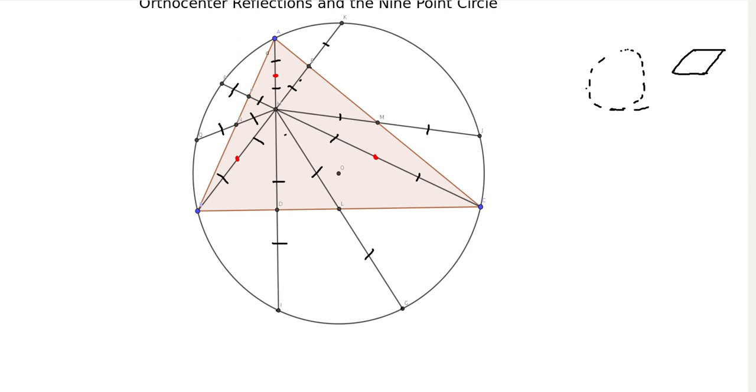So K is being mapped to E. A is being mapped to this midpoint, which I don't have labeled. And so all of these points are being mapped onto these nine, these other nine points. But since the original nine points lie on a circle, their map must also lie on a circle. So there's a circle which goes through these nine points. And that is the nine point circle.